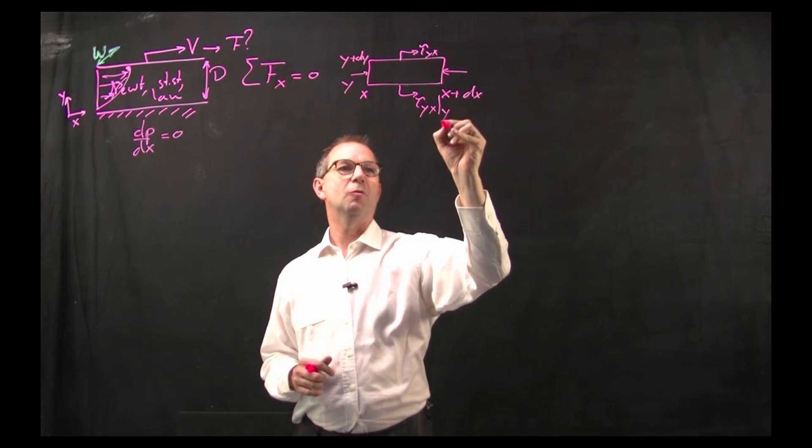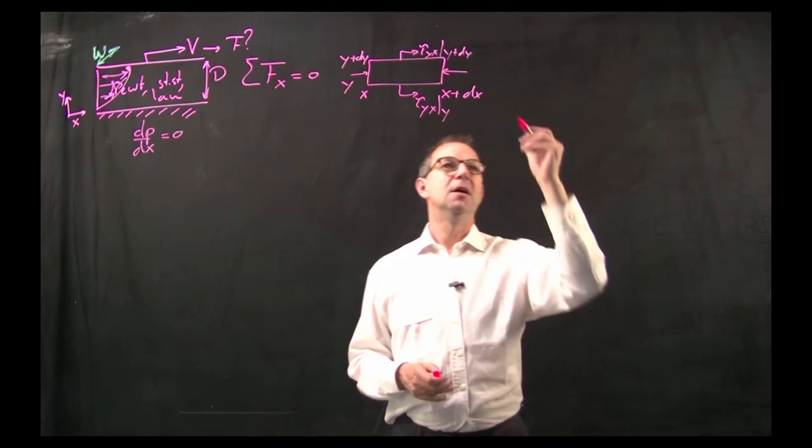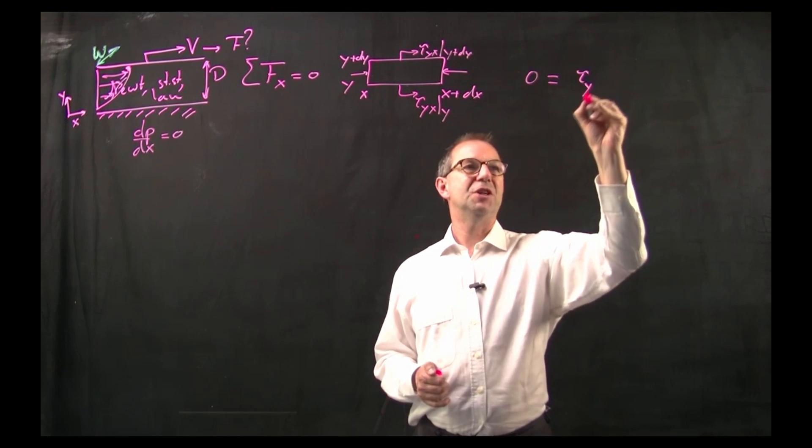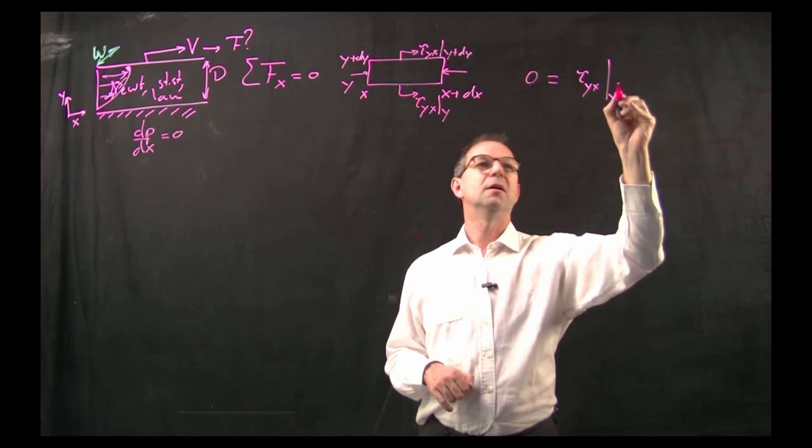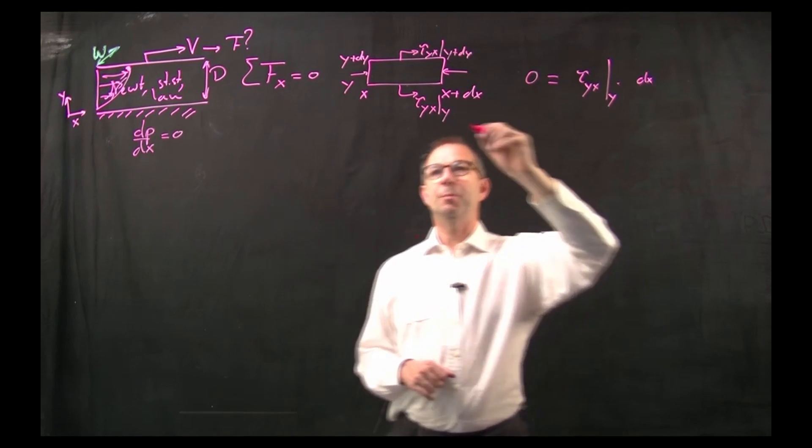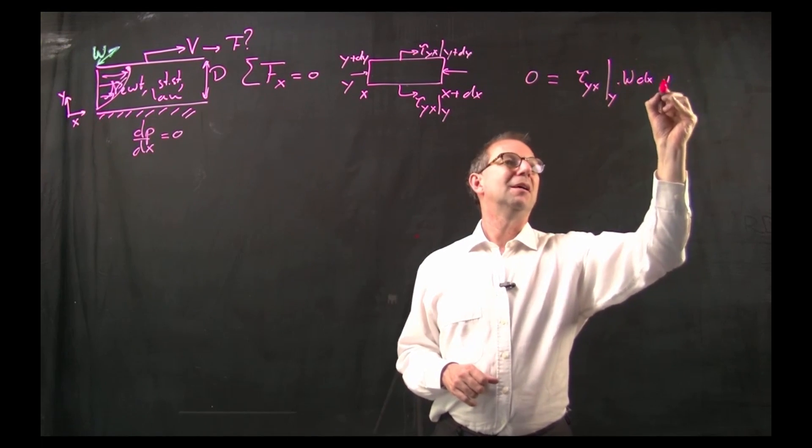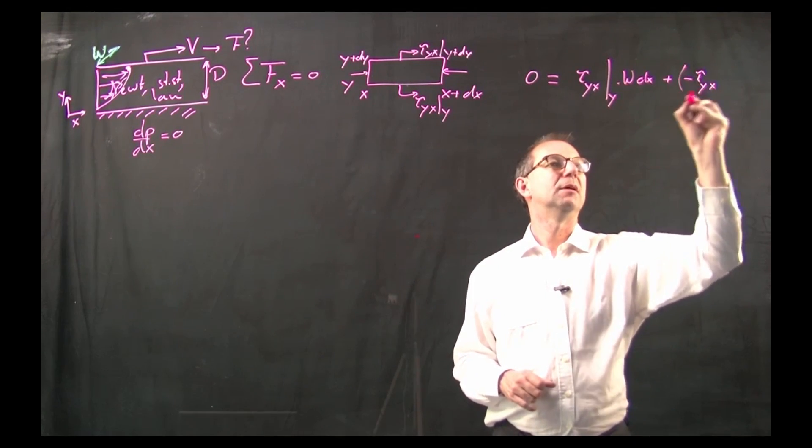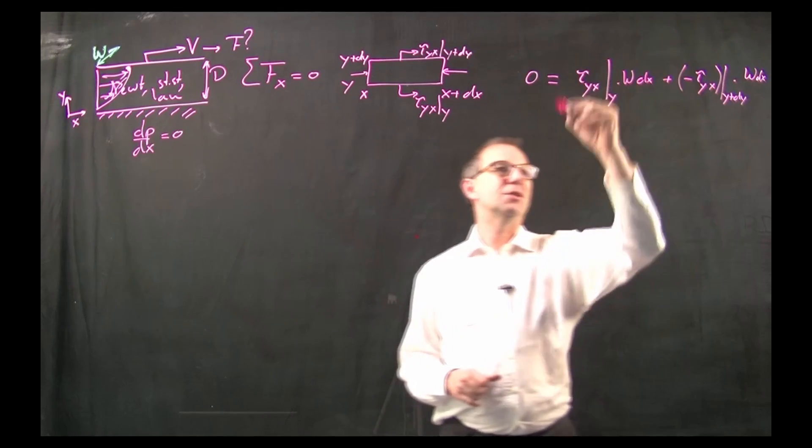And this one is position y and that is y plus dy. These are actually the only forces that influence the motion. Thus my force balance will be very simple. The shear stress at the bottom of my control volume that is y multiplied by this length dx multiplied by the direction w added to that the force on top which is minus tau yx by y plus dy. This is zero.